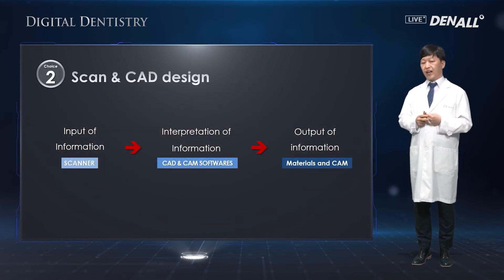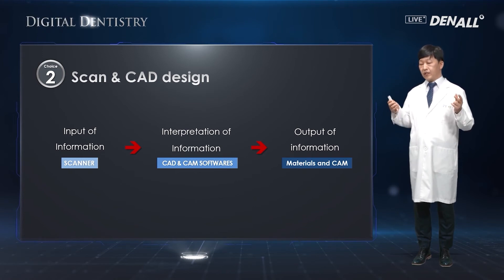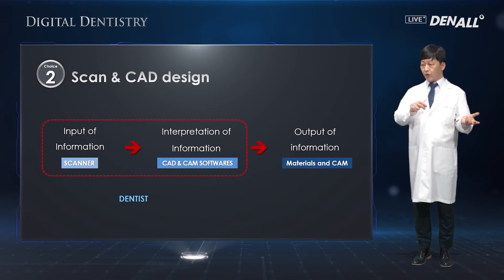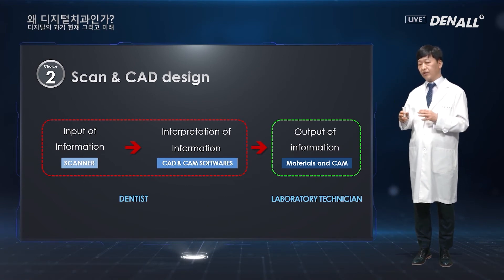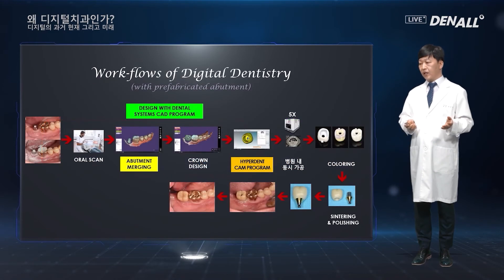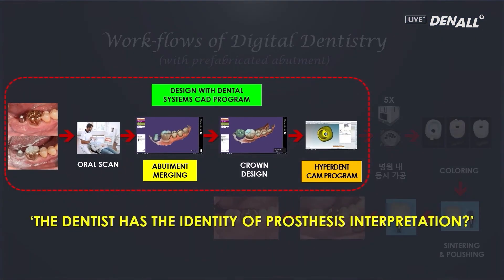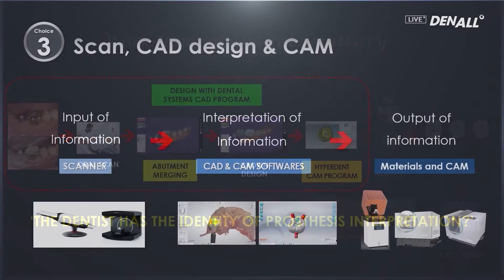The second option: the dentist can be in charge of input and interpretation of data, and make requests for printing to the lab. You design your prosthesis using a CAD program and have the prosthesis printed out by the lab. In this case, the interpretation of the prosthesis is done by the dentist. This is the ideal option.